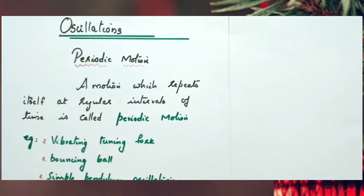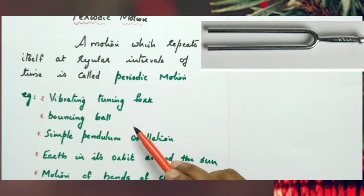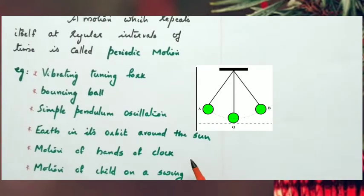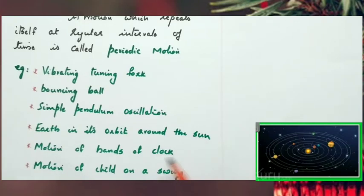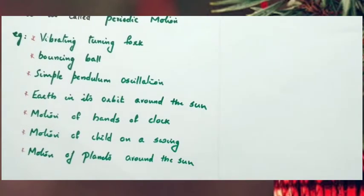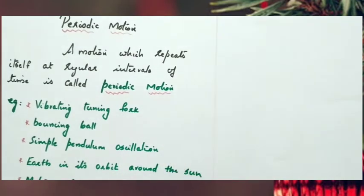So now we have to study the important topic: periodic motion. The motion which repeats itself at regular intervals of time is called periodic motion. Examples include a vibrating tuning fork, a bouncing ball moving up and down, motion of a simple pendulum, motion of planets or Earth in its orbit around the sun, motion of hands of a clock, and motion of a child on a swing. These motions all repeat after regular intervals of time.